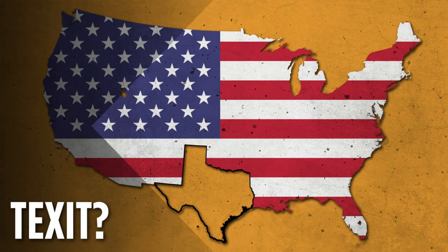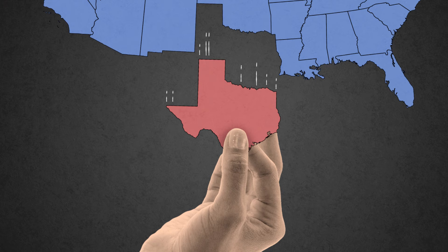Why was Texas divided after it joined the USA? Texas divisionists argue that the division of their state could be desirable because, as the second largest state in the United States in both area and population, Texas is too large to be governed efficiently as one political unit, or that in several states, Texans would gain more power at the federal level.